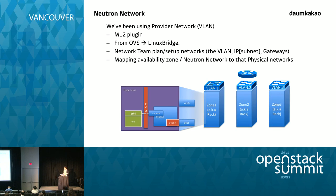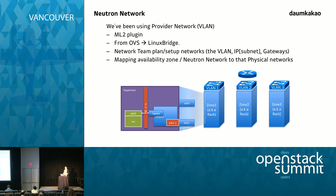Let's go to the Neutron networks. We've been using provider networks, so our network team prepared Neutron networks for us. Right now we are using the ML2 plugin. We started the beta service from Grizzly and have upgraded all the way to Juno, and we are preparing for Kilo. Changing to the ML2 plugin was not easy because at that time there was no table for layer-2 abstraction and the database migration scripts sometimes didn't work. But nowadays it's quite mature, so you can upgrade between versions without any problem.